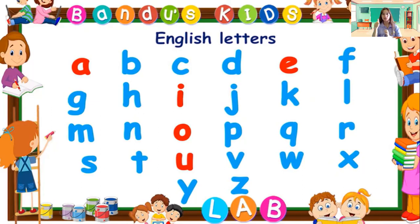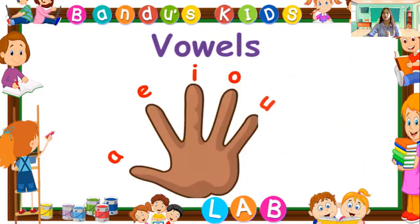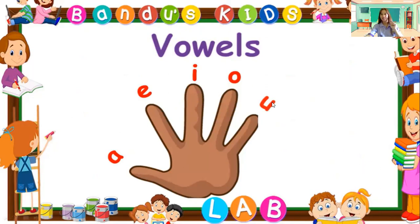Do you understand, students? Let's continue. Again, what are the vowels? We have five only. Vowels are five. What are they? A, E, I, O, U. They are the vowels.